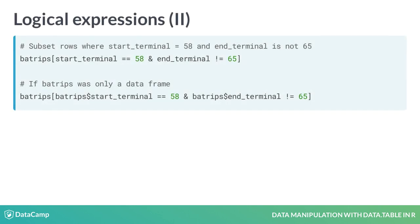Here's another example. In this example we filter for rows where start_terminal column is 58 and end_terminal column is not 65. Again note the concise and clear syntax of data table.